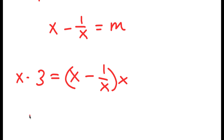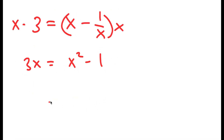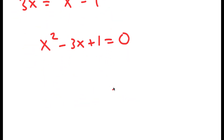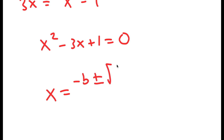I get 3x is equal to x squared minus 1, meaning I get x squared minus 3x plus 1 is equal to 0. Now to solve this I can use the quadratic formula: negative b plus or minus the square root of b squared minus 4ac, all over 2a.